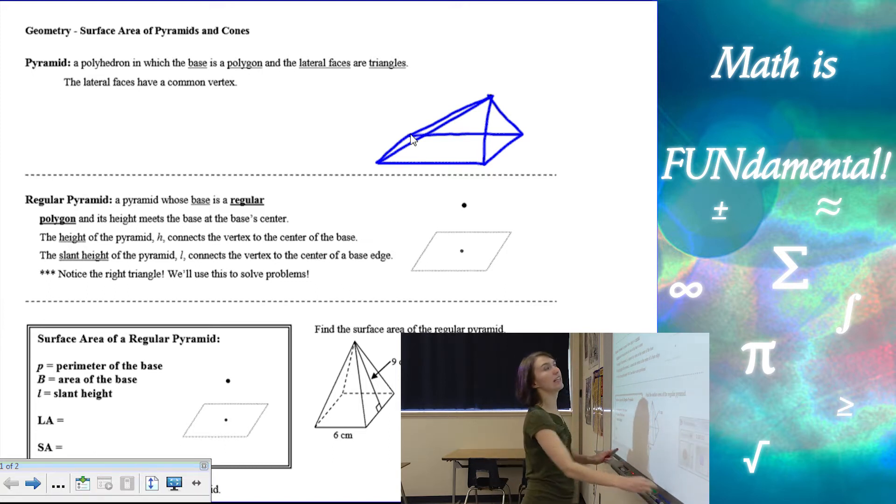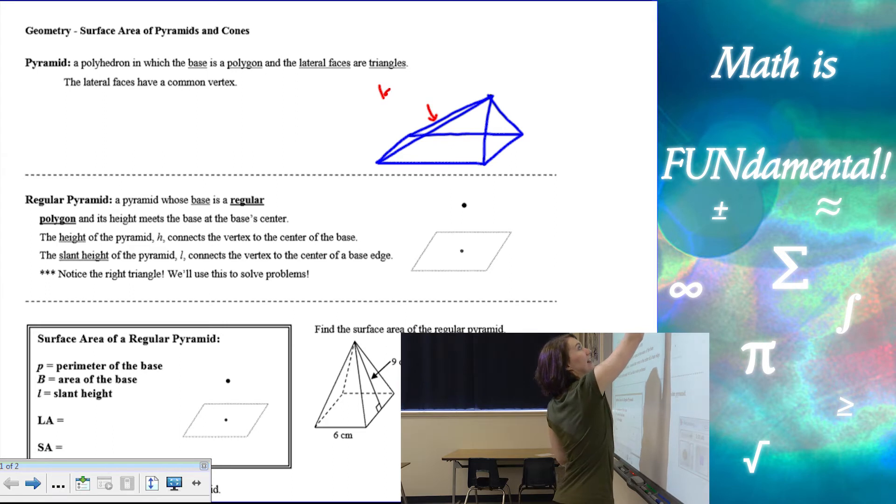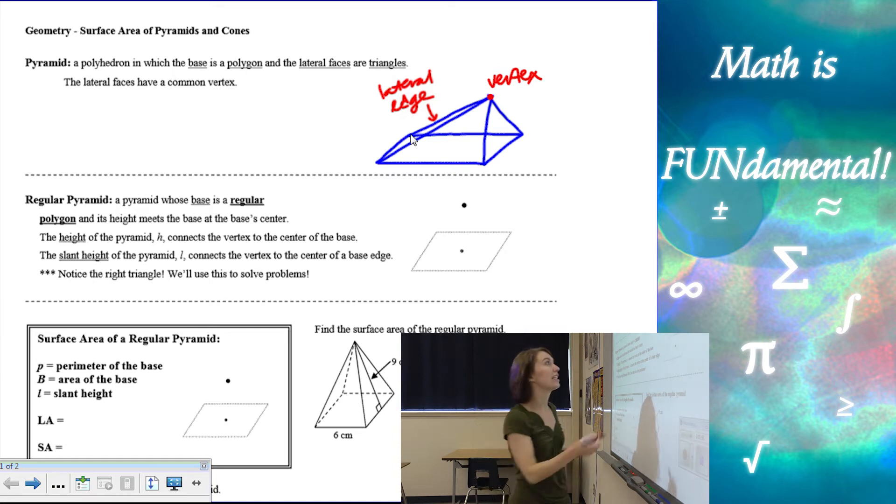So let's label some of these so we can see what the names of things are called. We have one of these is a lateral edge. The very top is called the vertex of the pyramid. And I know that technically these points at the bottom corners where the faces all come together are vertices. But when we speak about pyramids specifically, and we say the vertex of the pyramid, it's that top point where all the triangles come together.